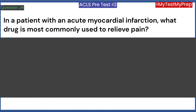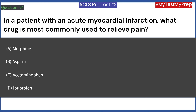In a patient with an acute myocardial infarction, what drug is most commonly used to relieve pain? A. Morphine. B. Aspirin. C. Acetaminophen. D. Ibuprofen. Answer: A. Morphine.